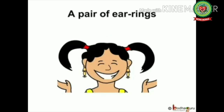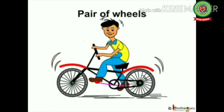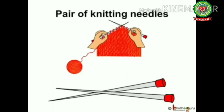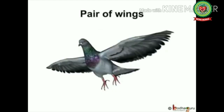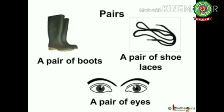Socks and shoes are worn in pairs only. Hand gloves also come in pairs. A pair of earrings means two earrings — you must have seen your mother wearing a pair of earrings. A bicycle has a pair of wheels. You must have also seen your grandmother knitting woolen clothes — these knitting needles also come in pairs. Birds too have a pair of wings.